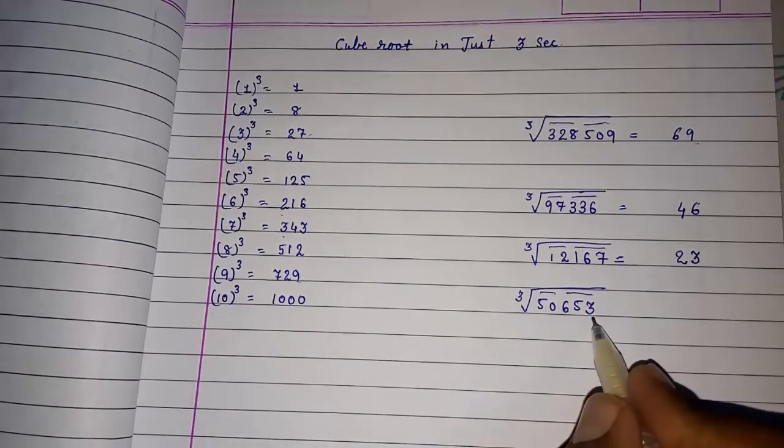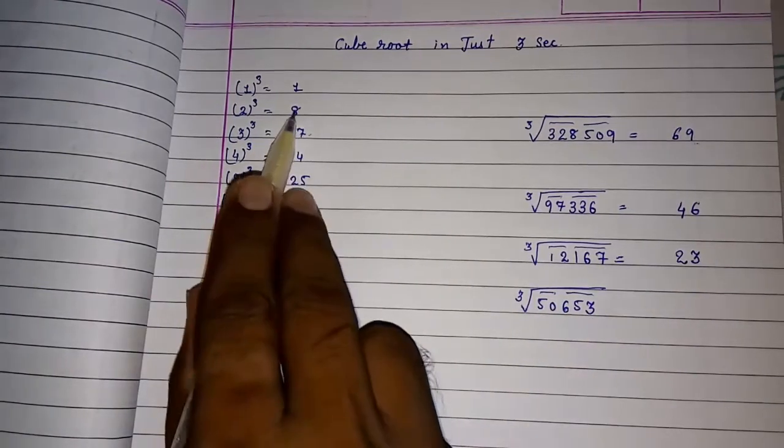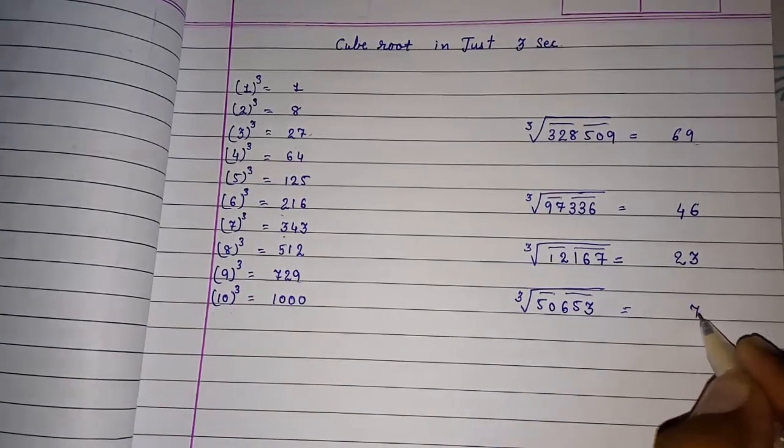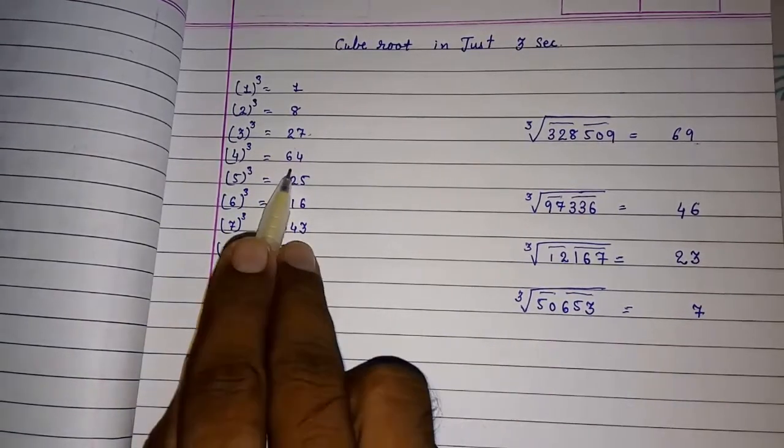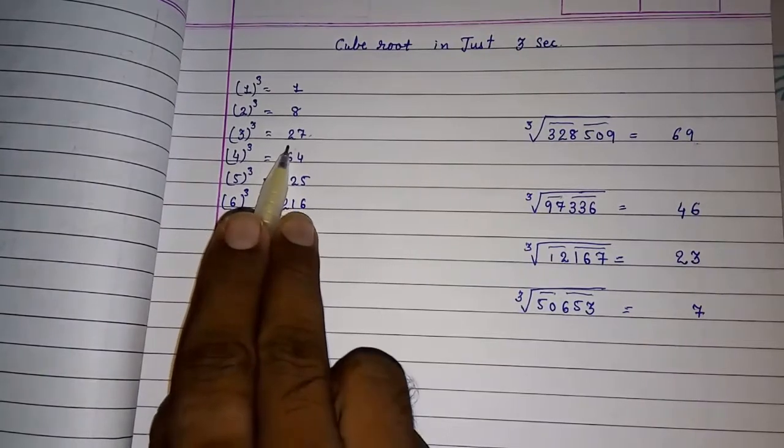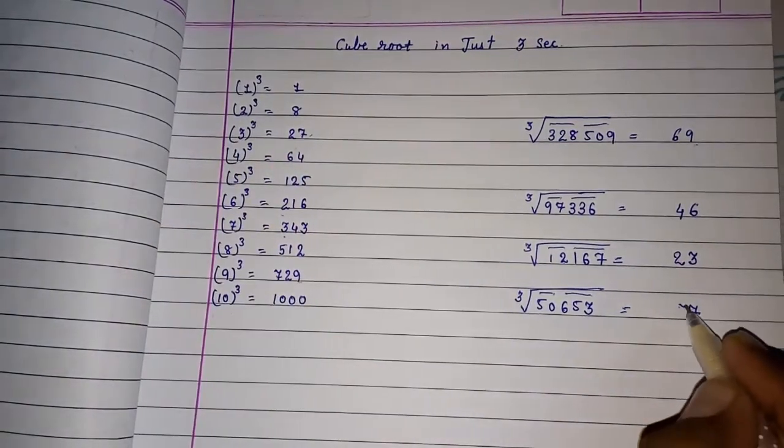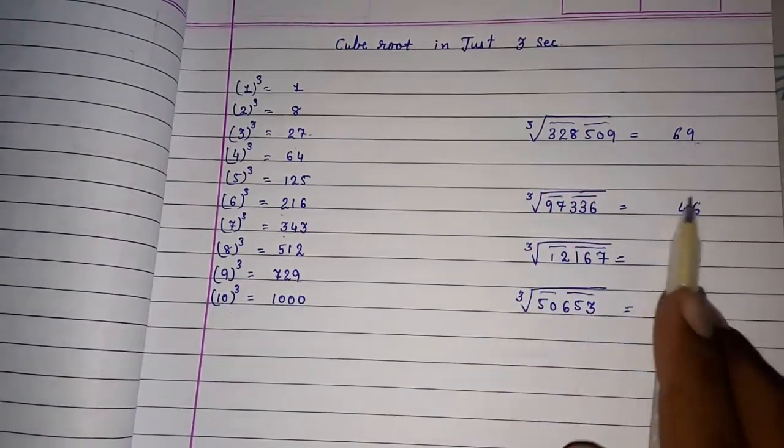Again, last digit is 3. So 3 will come here. So 7 at the last. And 50. So 50 will come between 27 and 64 here. So we have to select the previous. So that will be 3. So these are the cube roots of this number.